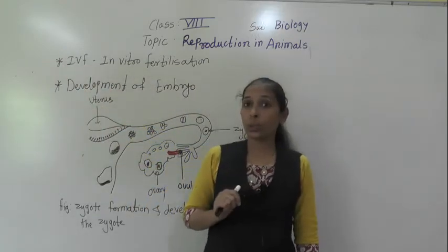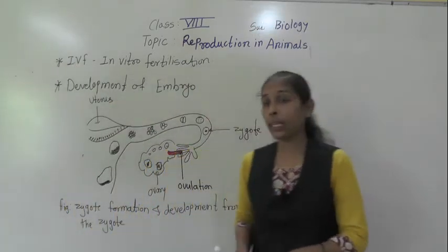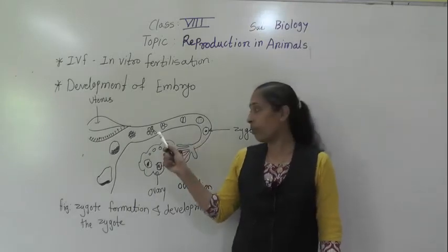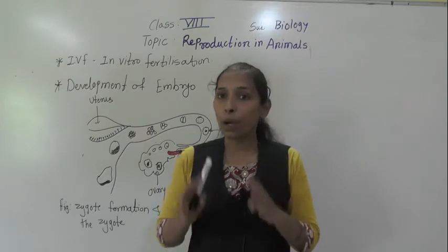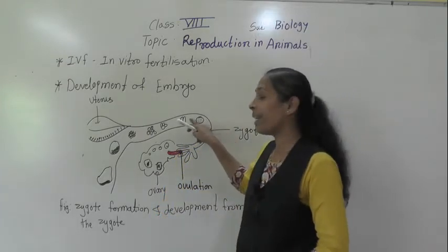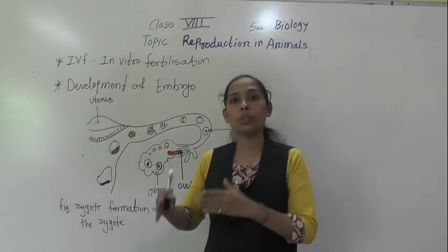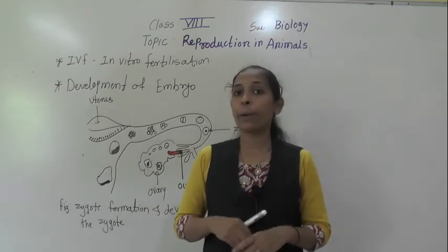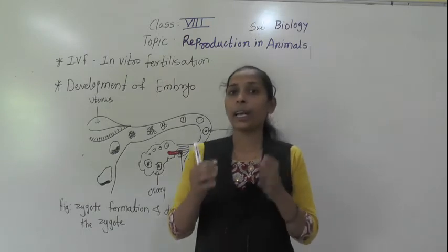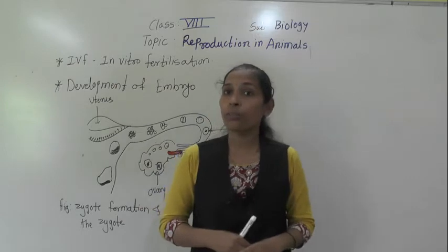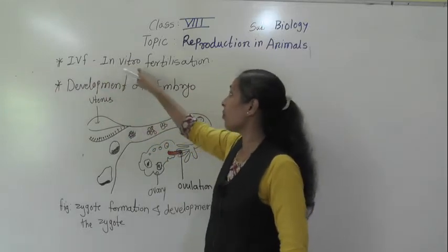What is meant by IVF? As we know, fertilization happens in the fallopian tube. But in some women, this fallopian tube or oviduct is closed. Because of that, the eggs cannot get transferred into the fallopian tube and the fertilization does not occur. In that case, freshly released matured eggs and sperms are collected outside and kept for the process of fertilization — that process is called IVF, that is In Vitro Fertilization.